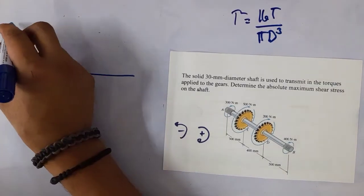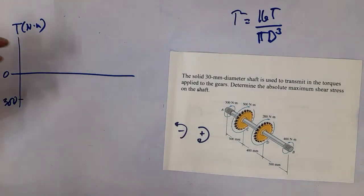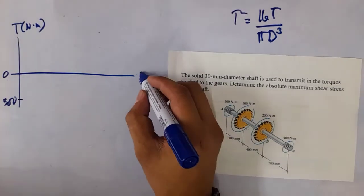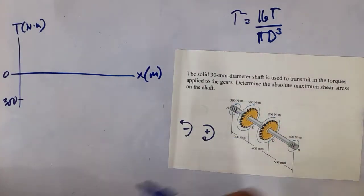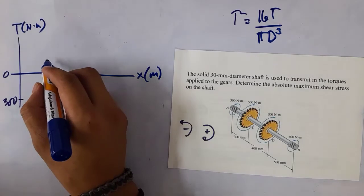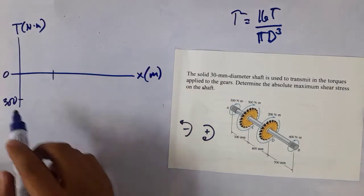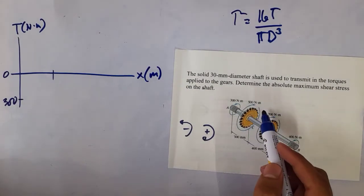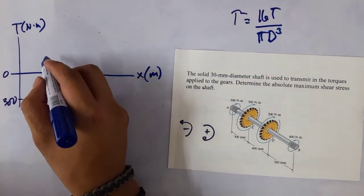So this starts at zero. The torque is in Newton meters, and the x-axis is distance in meters. At distance zero, we have negative 300 Newton meters. At distance 0.3 meters, we add the 500 Newton meter torque: negative 300 plus 500 gives us 200 Newton meters.